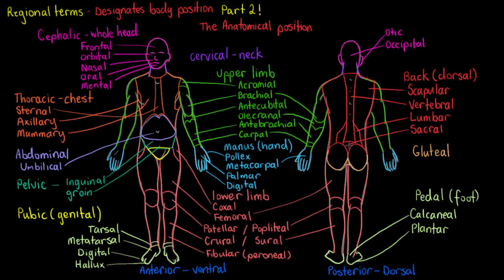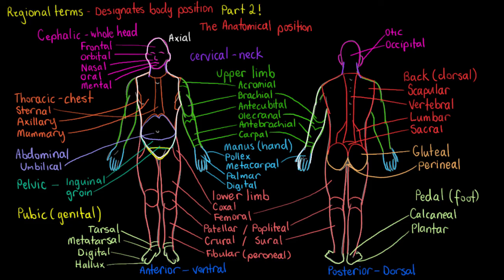We've only got one region left: the gluteal. The gluteal has one subdivision — the perineal, which is the area between the anus and the external genitalia. So we've got the gluteal, which is your butt, and the perineal underneath. The body, apart from all these regions, also has two major subdivisions: the axial, which refers to your head, neck, and trunk, and the appendicular region, which refers to all your limbs. Everything we've learned in these two Regional Terms videos can be broadly determined to be either axial or appendicular.